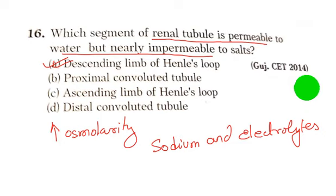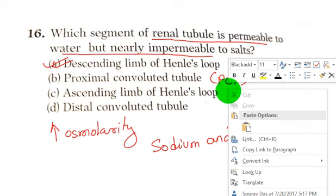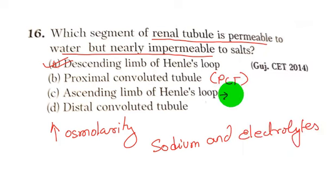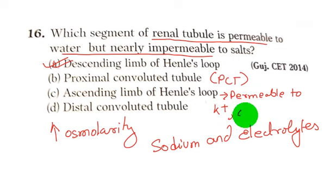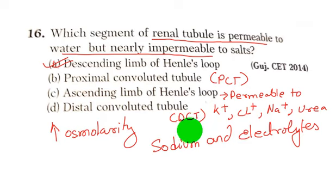The other options: the PCT, or proximally convaled tubule, reabsorbs nearly all essential nutrients, electrolytes, and water. The ascending loop of Henley's loop is impermeable to water but permeable to salts such as K+, chlorine, and sodium, and partially permeable to urea. The DCT, or distal convaled tubule, is responsible for reabsorption of water and sodium, and secretion of hydrogen and potassium.